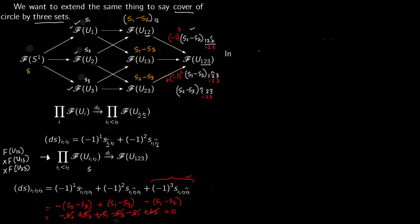So S1, S2, S3 all map to zero — we indeed have a complex. This is the way to write the complex: you first order the indices. For example, if you have 1,3 you write 1 first and 3 next, then you see which position is missing. If the first position is missing you get minus 1 to the power of 1; second position missing gives minus 1 squared. Notice that when we started, we multiplied S1 by minus 1 squared — although 3 is missing, 3 was in the second position.